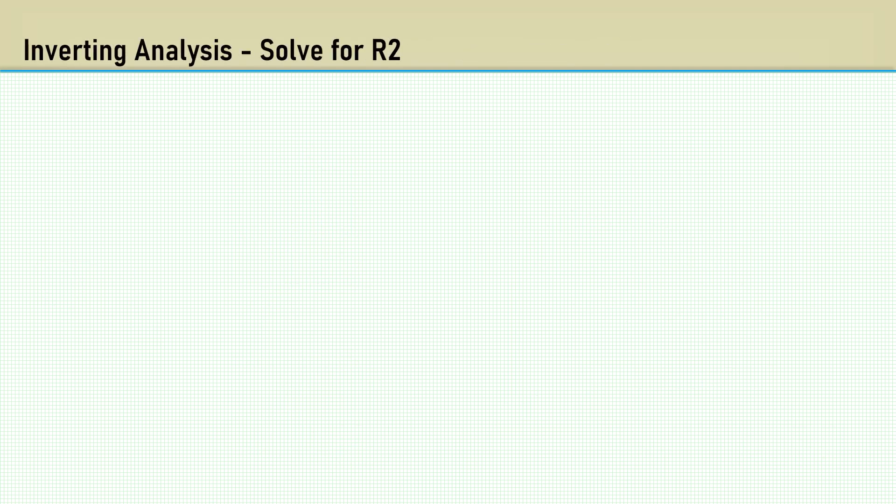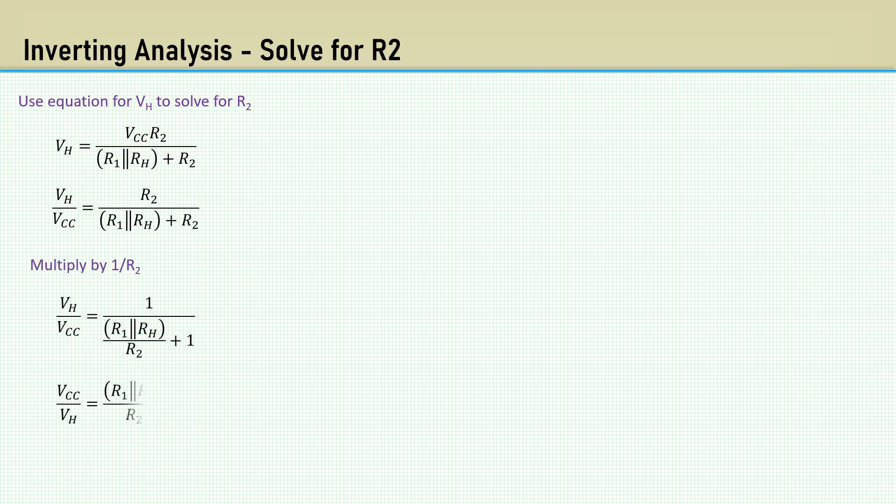Now let's work towards solving R2. Recall the equation for VH. We can use that to solve for R2. Eliminate the second occurrence of R2 by multiplying top and bottom by 1 over R2, then rearrange to solve for R2.